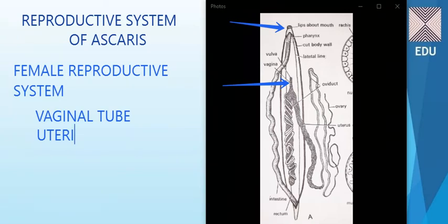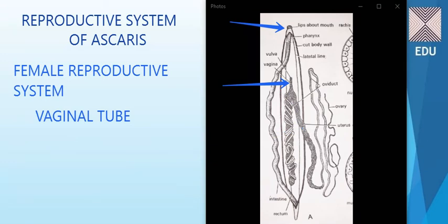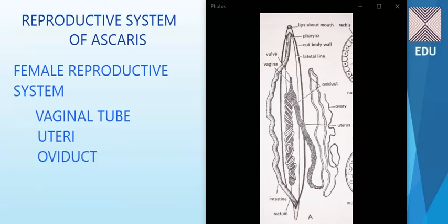You can see this particular structure is the uterus — one on one side, one on the left — so there are two uteri. The uterus contains capsules or fertilized eggs, the physiology of which will be covered in later lectures. The third part, after the uteri, is the oviduct. The oviduct is present here in the diagram.